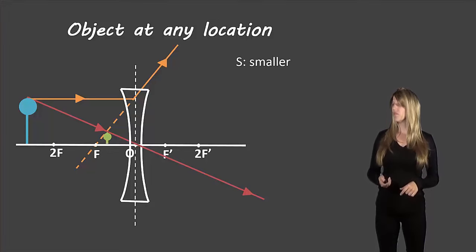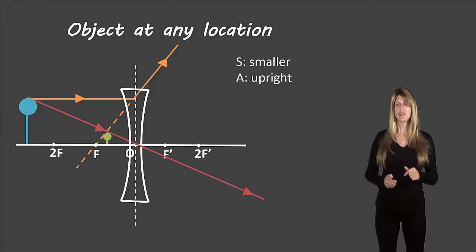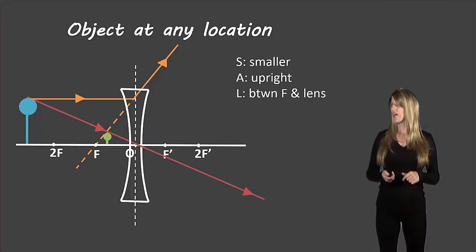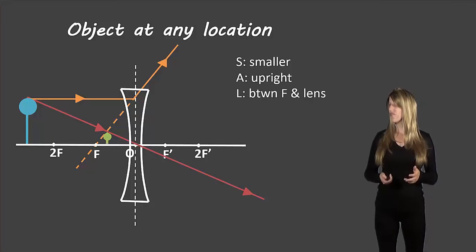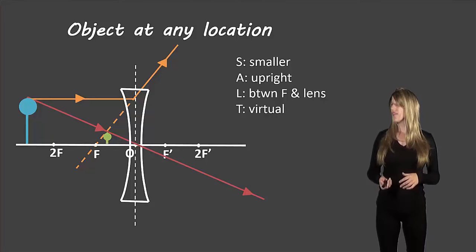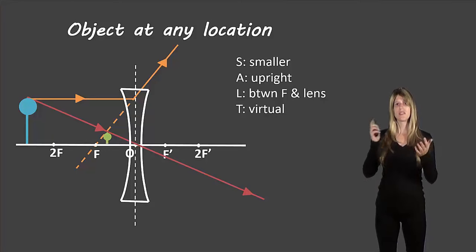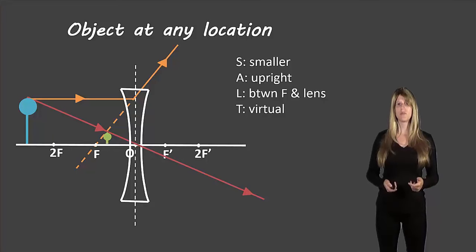Now if we're going to describe this image, we would say that it's smaller, that it's upright because they're both facing in the same direction, that it's between f and the lens, and that it is a virtual image because it's on the same side of the lens as the original object.